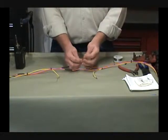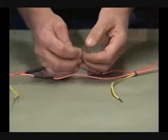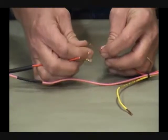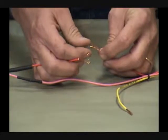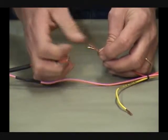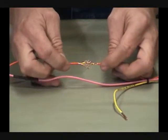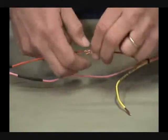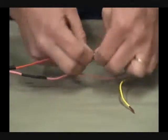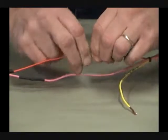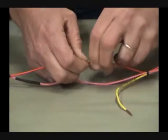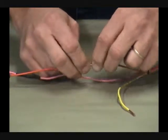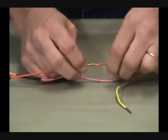After the heat shrink is on, take the stripped end of the wire and splay the strands out. Splay them out in all directions. Then take the wires and overlap them inside each other and twist it together. Twist it nice and tight, as tight and smooth as you can get it. The tighter and smoother it is, the better the finished product is going to look. Also, try to get it straight, because once you put solder on it, if it's bent, it's going to stay bent.